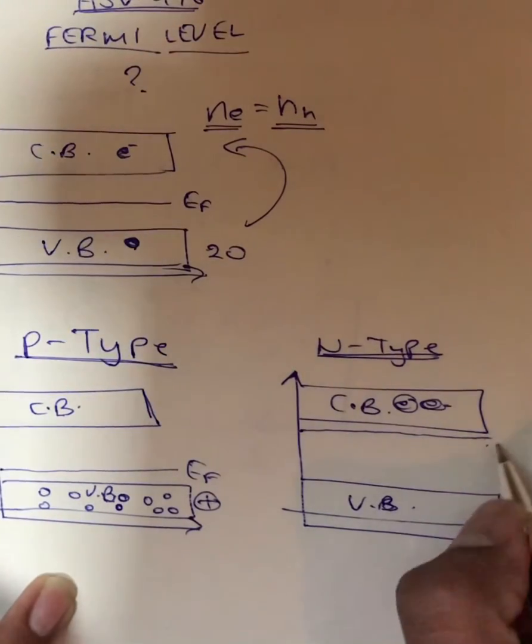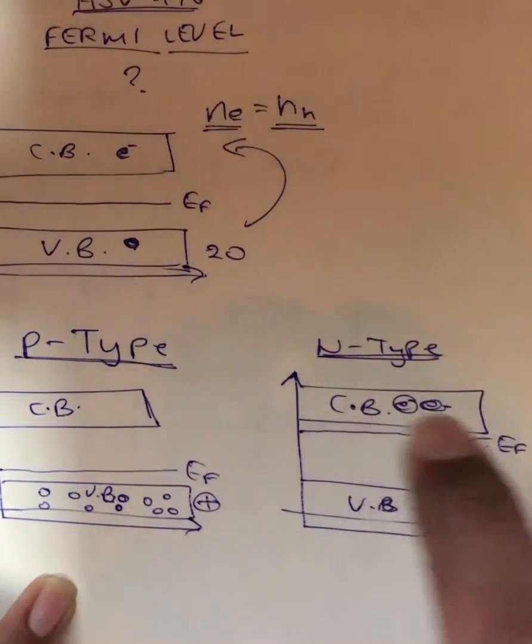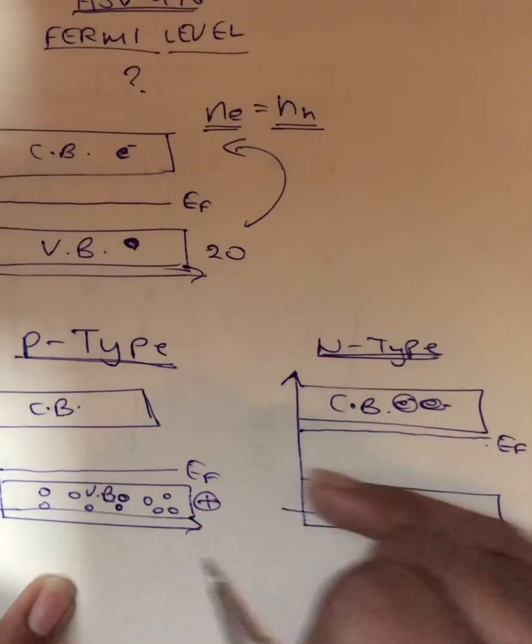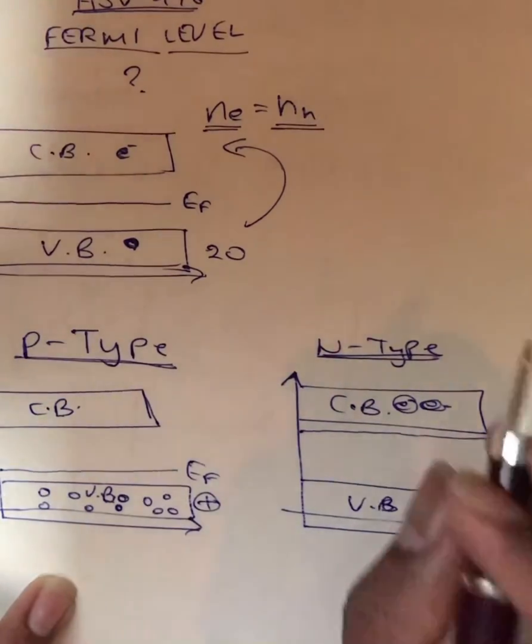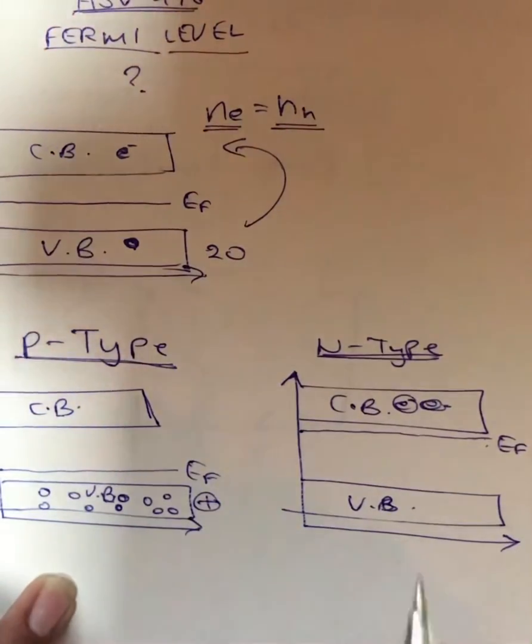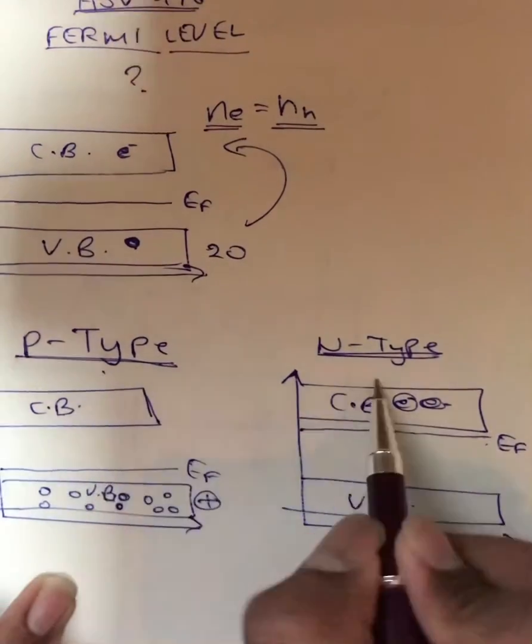So the probability of finding a charge is more in the conduction band, therefore the Fermi level will lie towards the conduction band. So this is all you should know about the basics of the Fermi level in p-type and n-type semiconductors.